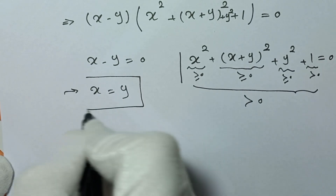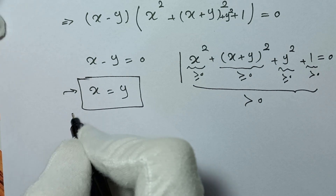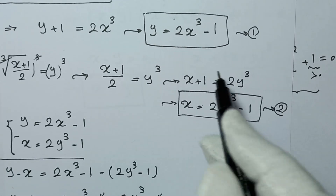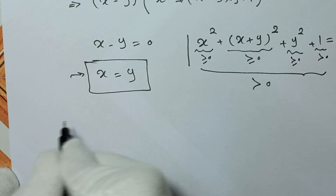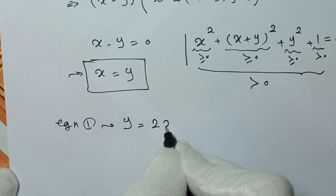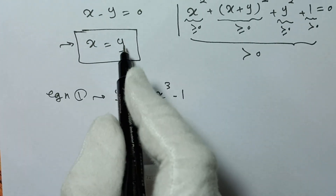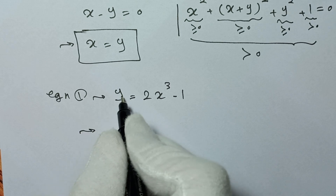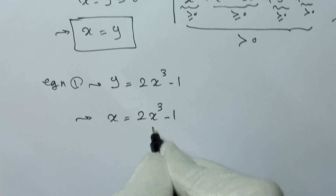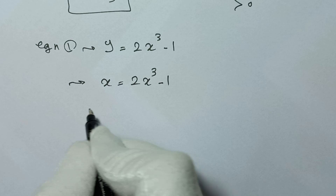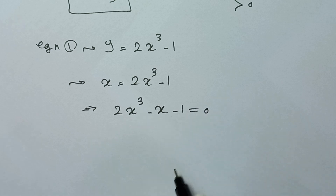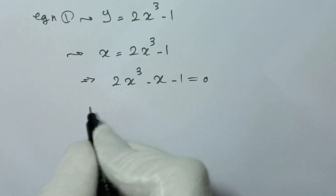Since x equals y, we substitute into equation 1. Equation 1 is y equals 2x³ minus 1. Since y equals x, we write x equals 2x³ minus 1. Taking x to the other side gives 2x³ minus x minus 1 equals 0.